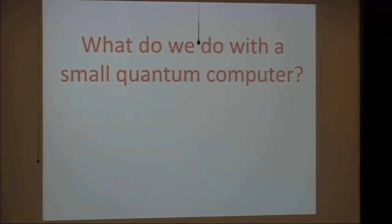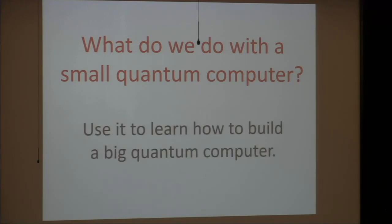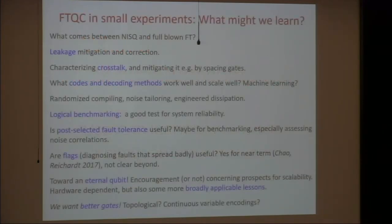The first event like this one that I remember attending was in 2013 at IBM — it was called 'What do we do with a small quantum computer?' One of the answers some of us gave at the time: we should be using it to learn how to build a big quantum computer. I think that's still a good answer — not the only answer, but one of the good ones. For those of us who have been working on quantum error correction for over 20 years, it's exciting to think that we'll really be doing quantum error correction in a serious way in the lab during the NISC era — though initially at a rather small scale.